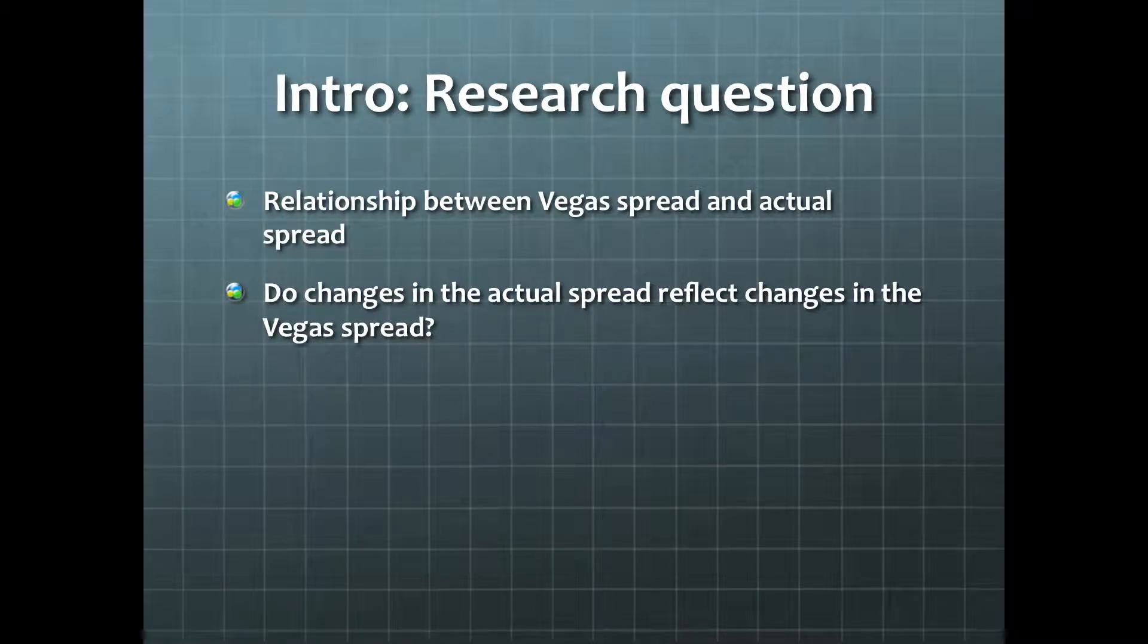Using the data, we want to see the relationship between the Vegas spread and the actual spread. The variables aren't really dependent on each other, but we can still see if the actual spread follows linearly with the Vegas spread. In other words, do changes in the actual spread reflect changes in the Vegas spread?